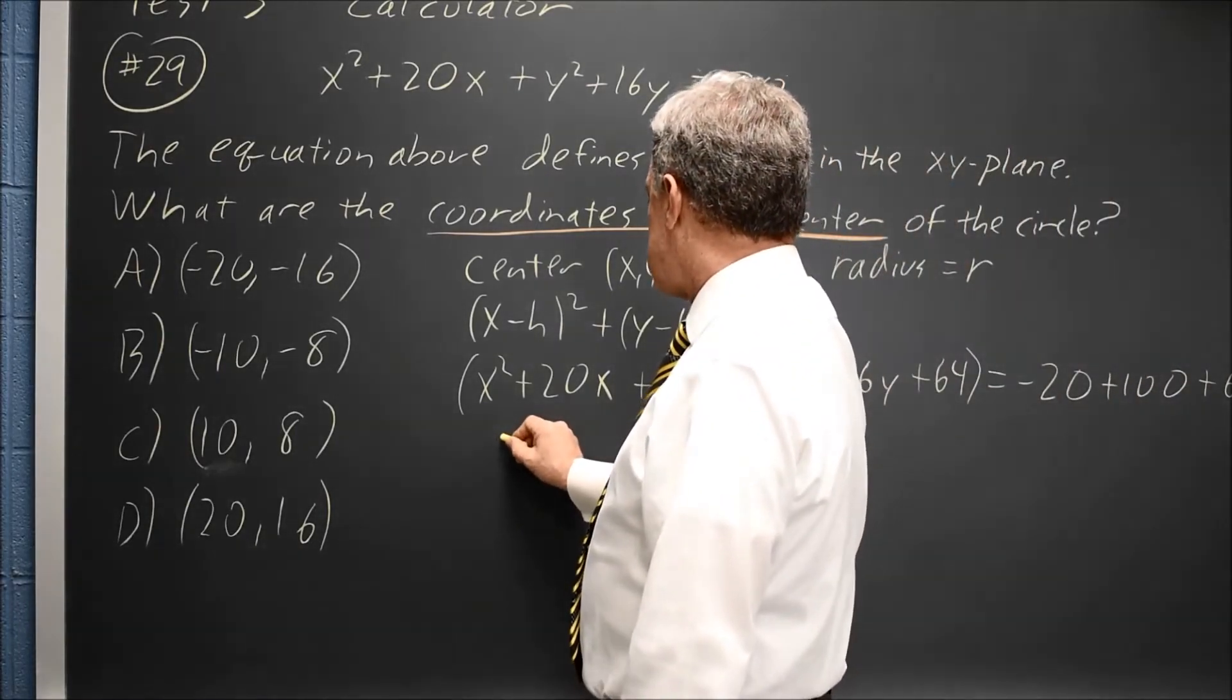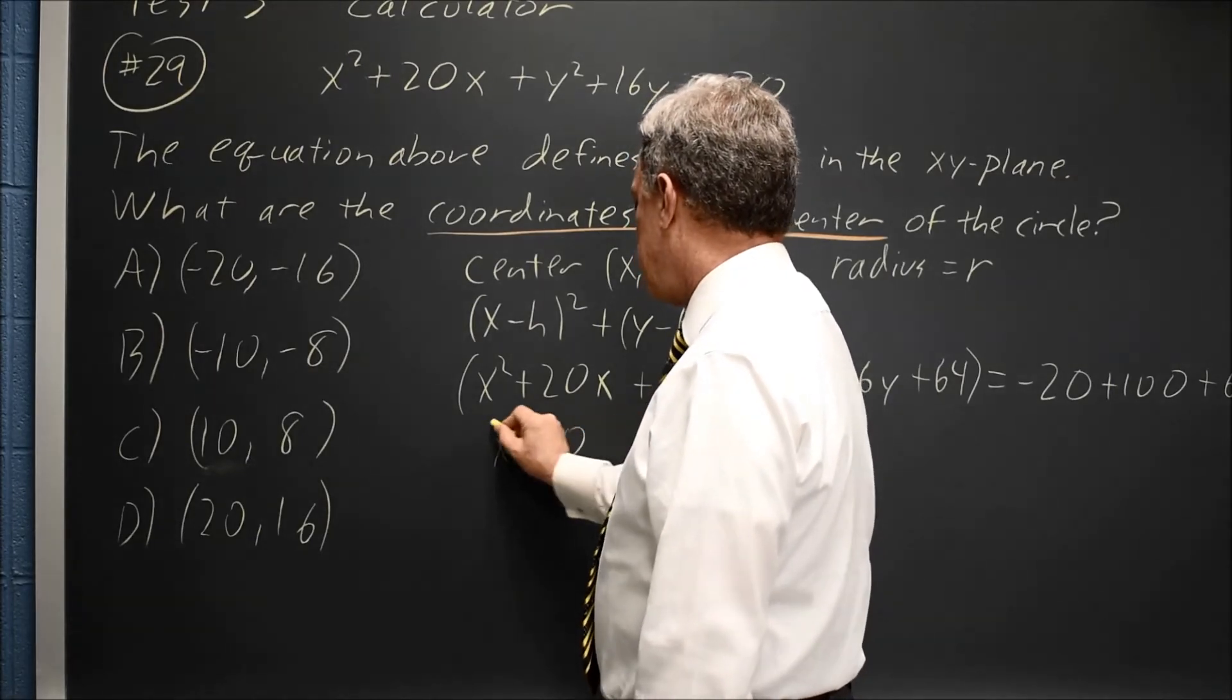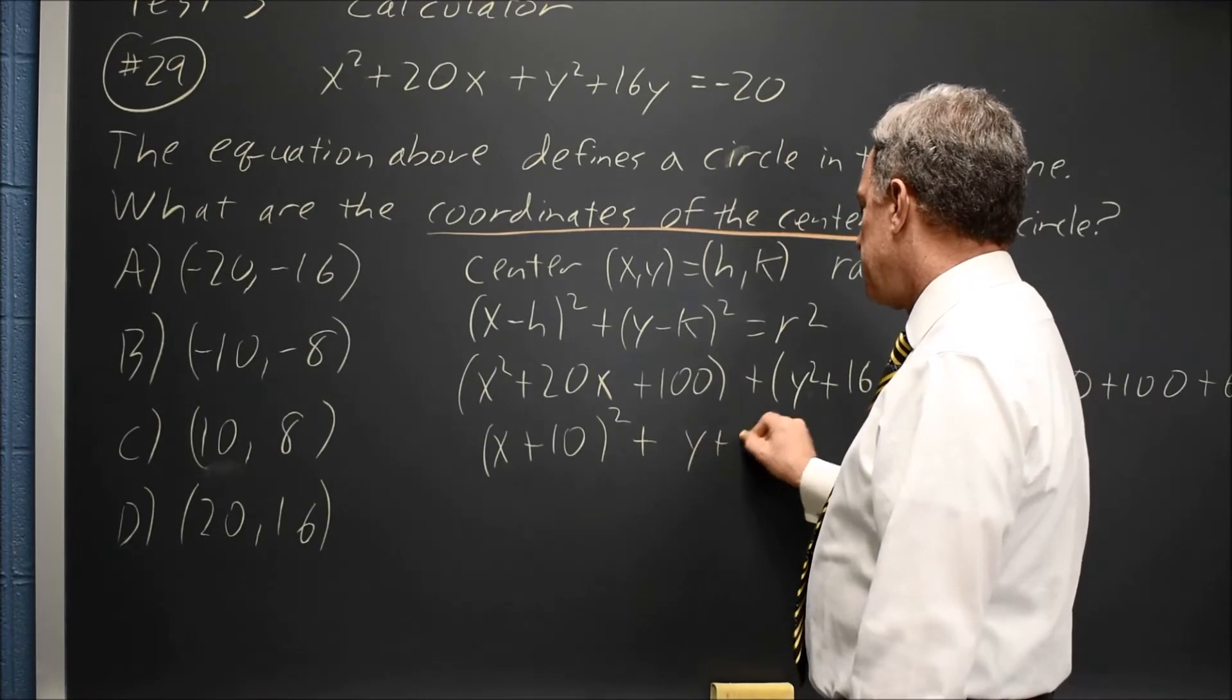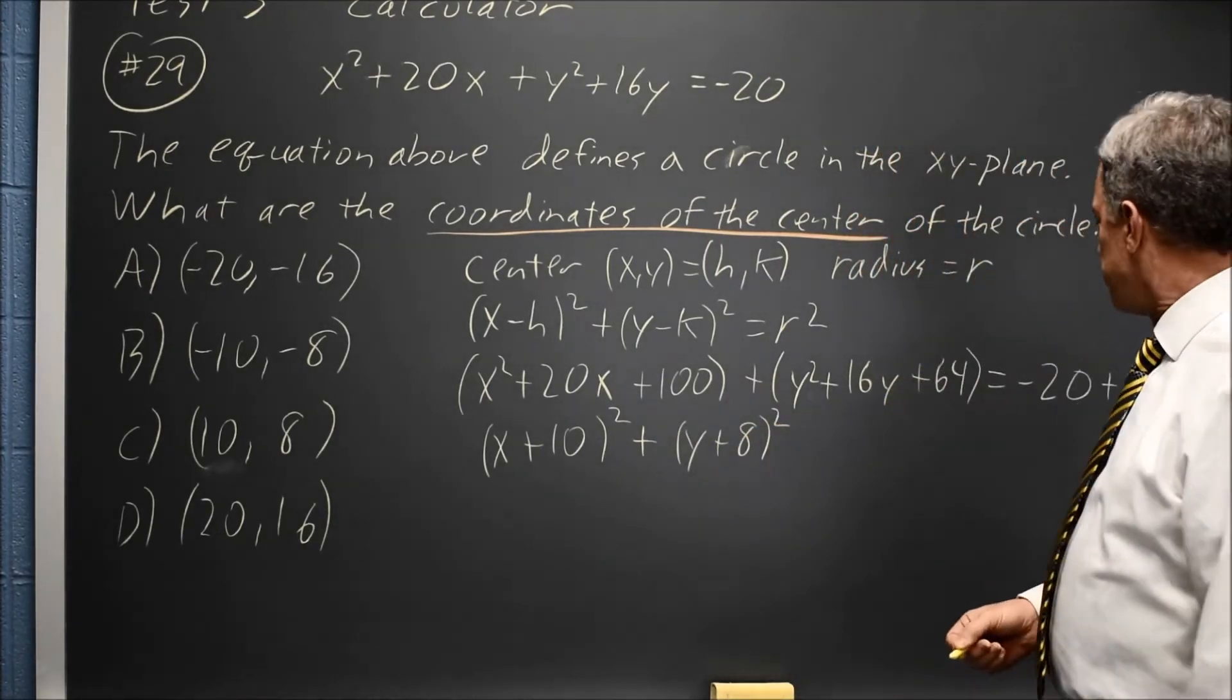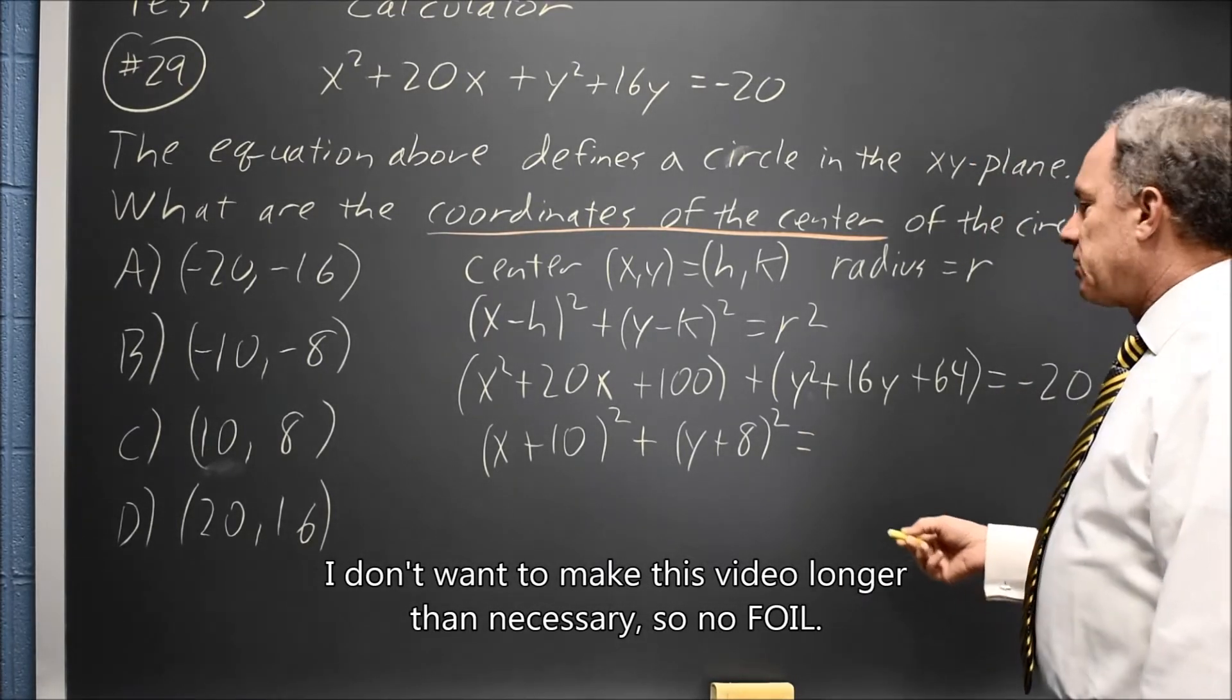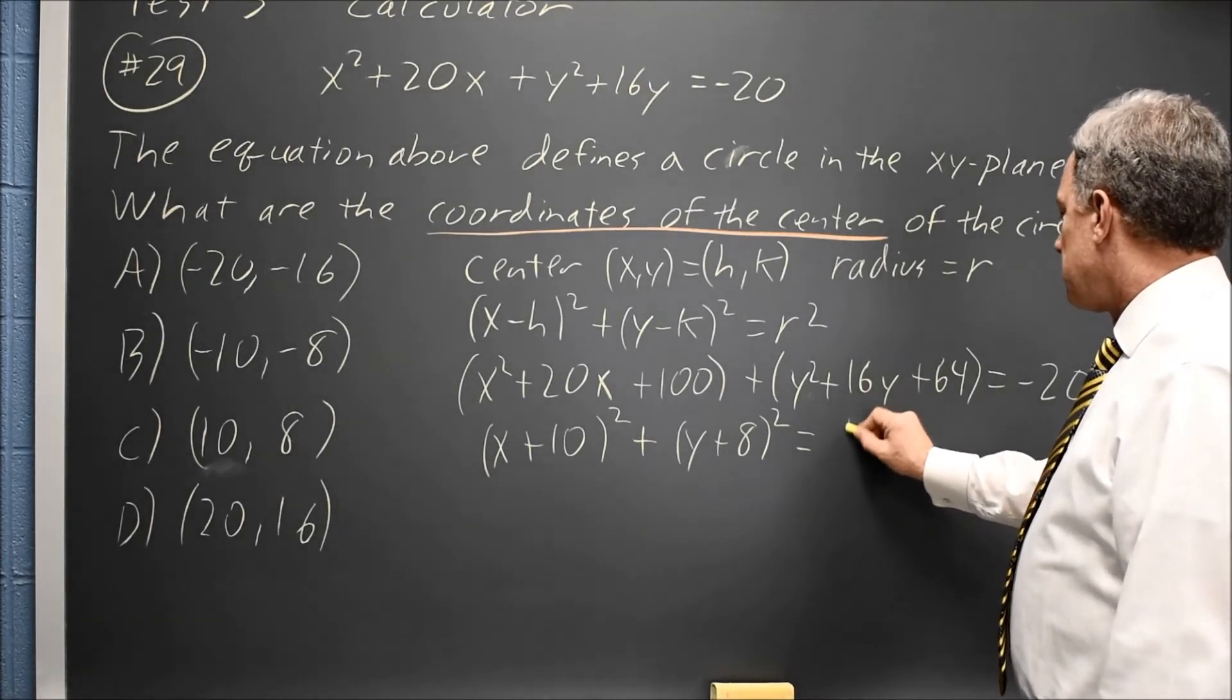The x polynomial factors as (x+10)². The y expression factors as (y+8)². I can check that with FOIL, but I won't. Combining the terms on the right, -20 + 100 is 80, plus 64 is 144.